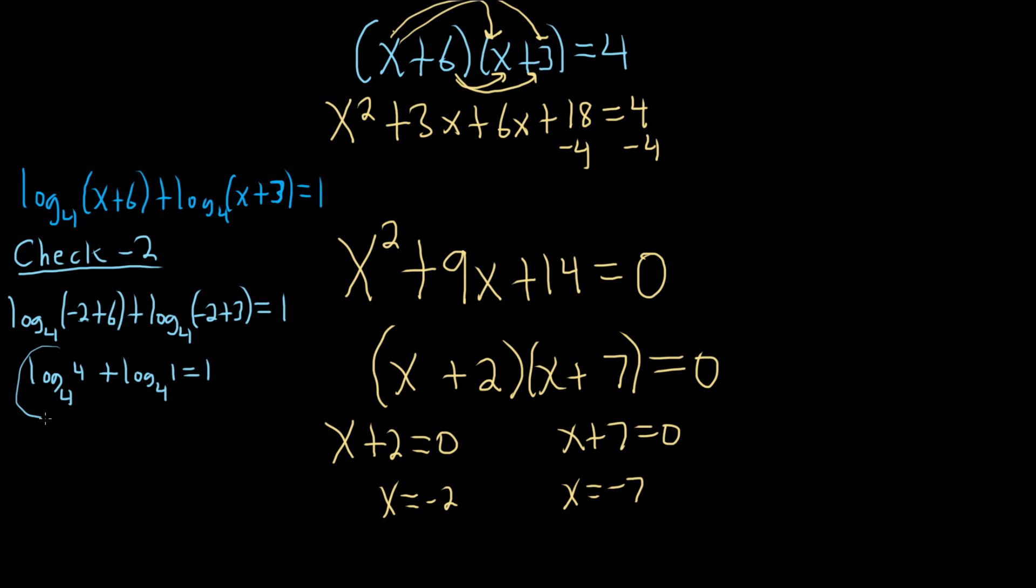So this is going to be 1. Because the question you ask is 4 to what power is 4? 1. And this is going to be equal to 0. Because the question you ask is 4 to what power is 1? 0. So the first one is 4 to what power will give you 4? 1. 4 to the 1 is 4. And this one is 4 to what power will give you 1? 0. Because 4 to the 0 is 1. So you get 1 equals 1. So that's true.